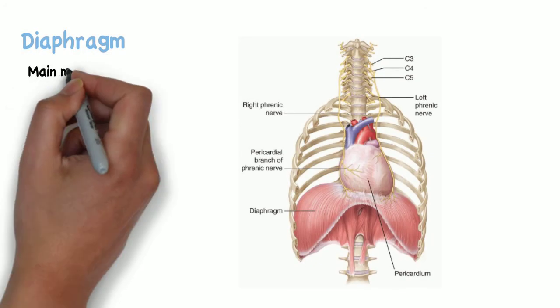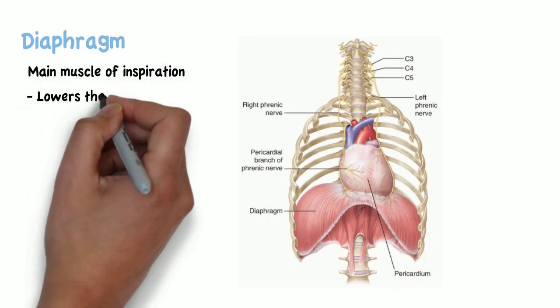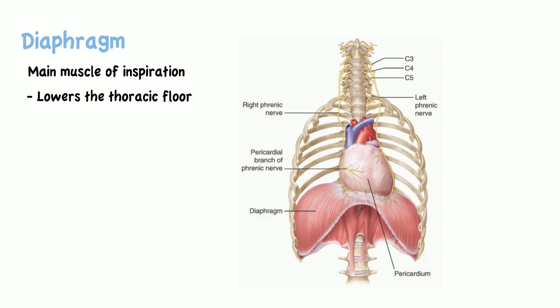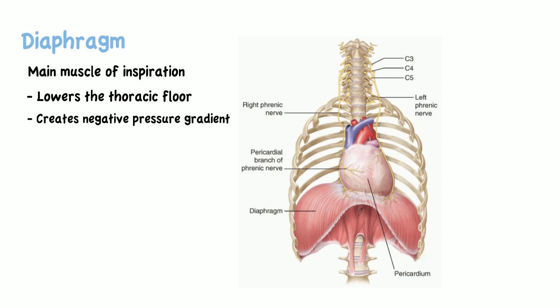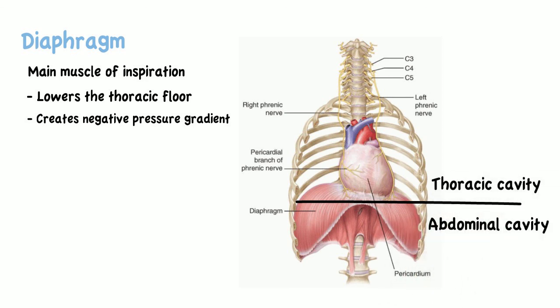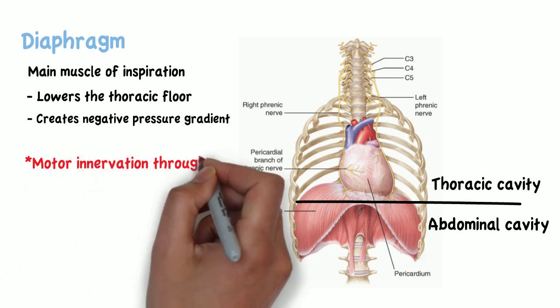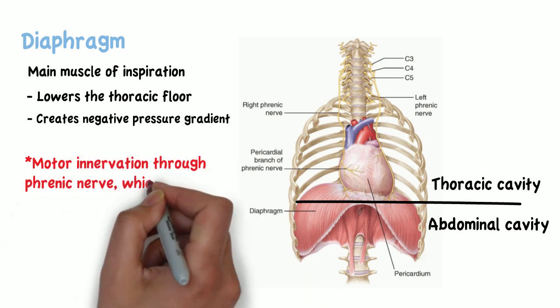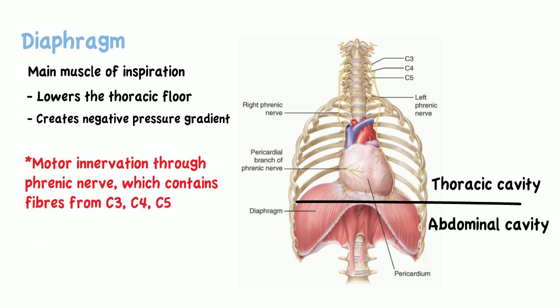Lastly, the diaphragm is the main muscle of inspiration. It serves to lower the thoracic floor, creating a negative pressure gradient which draws air into the lungs. The diaphragm is a thin skeletal muscle that sits at the base of the chest and separates the abdomen from the thoracic cavity. It receives motor innervation through the phrenic nerve, which contains fibers from spinal roots C3, C4, and C5.